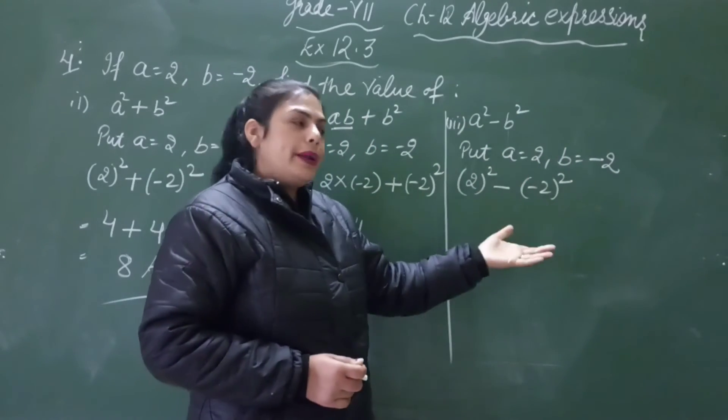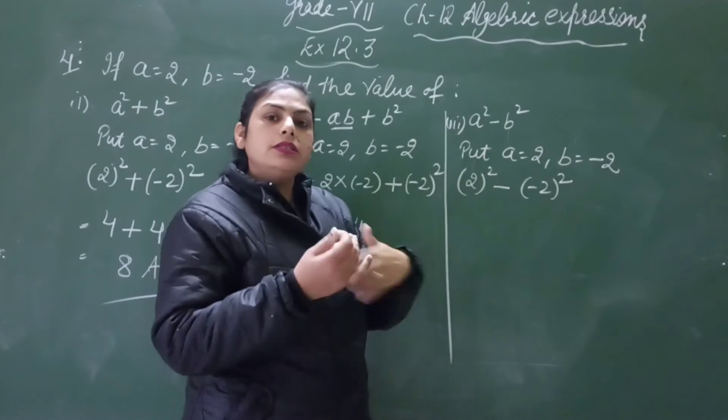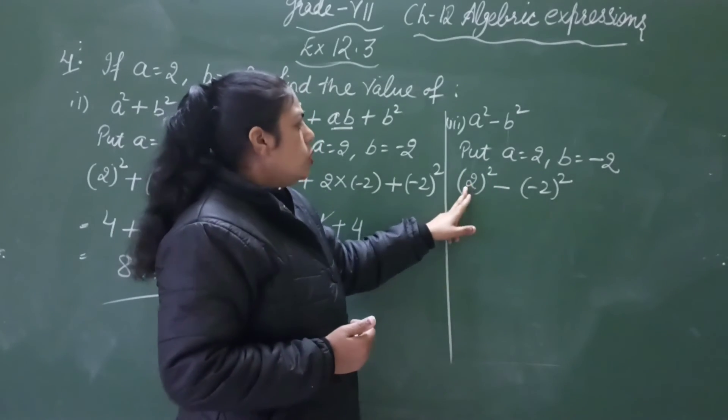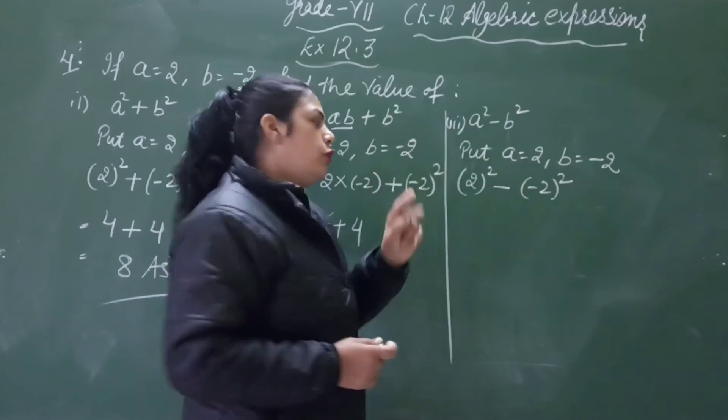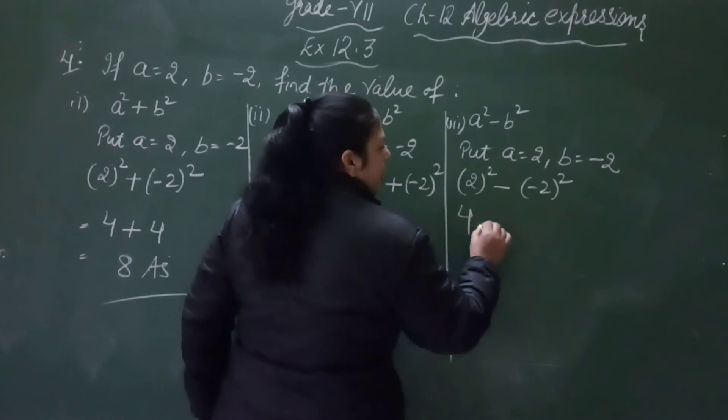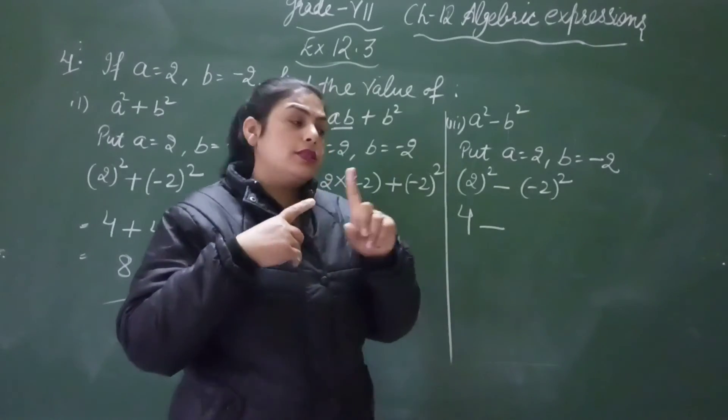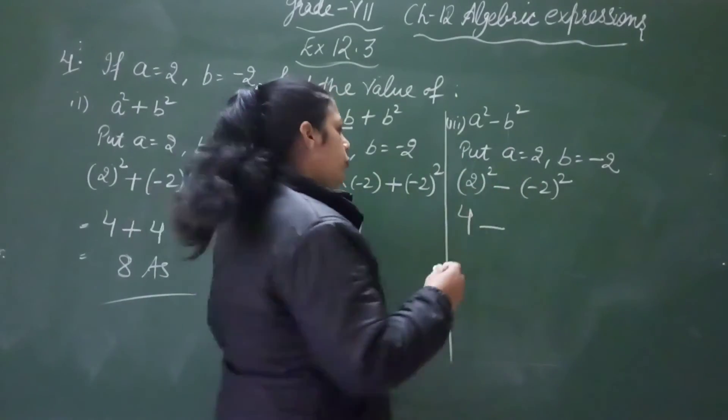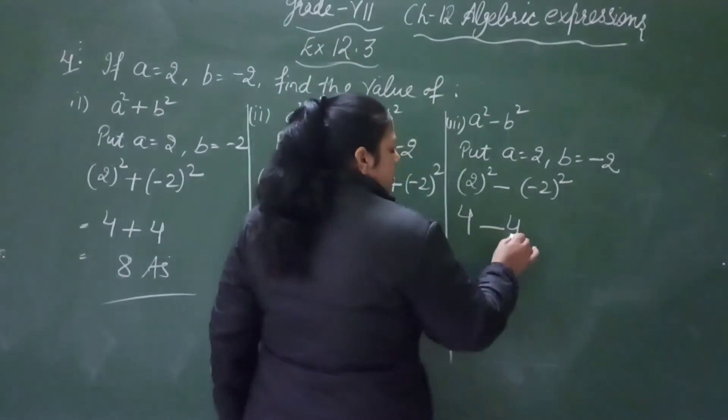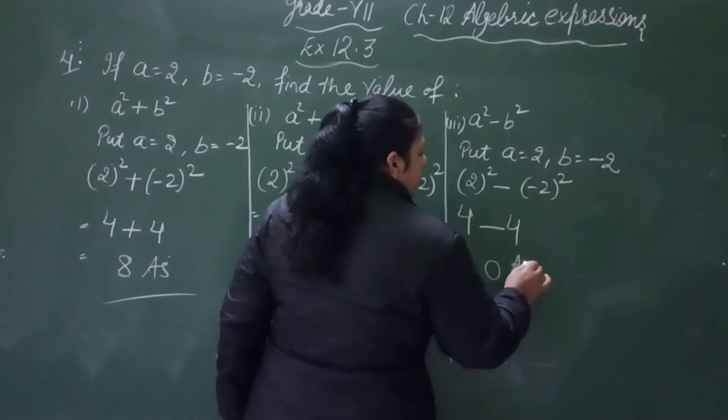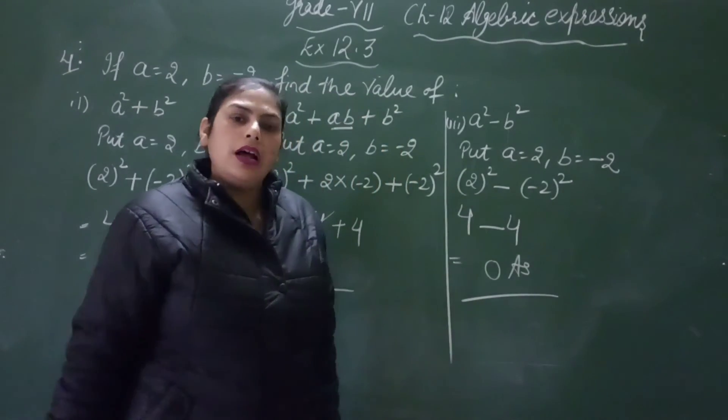Then we open the brackets. Powers means we multiply the base that many times. 2 square is 2 twos are 4. Then minus, minus squared, minus times minus is plus, 2 twos are 4. So 4 minus 4, that is 0. Clear? This is our answer.